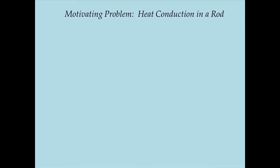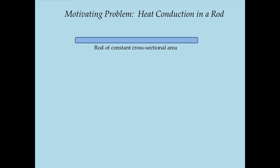The motivating problem is heat conduction in a rod. I want you to picture a rod of uniform material throughout. Let's assume that the properties of this rod are invariant with direction — it doesn't matter whether we're looking at the axial or radial direction. The heat conduction coefficient and other properties are the same in all directions. The way we've idealized this as a rod means we only care about heat transfer in the axial direction. The rod has a constant cross-sectional area, length L, and cross-sectional area A.